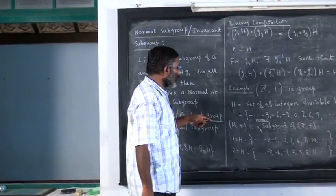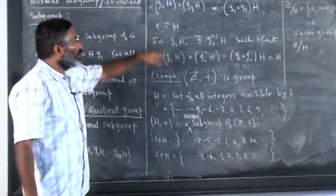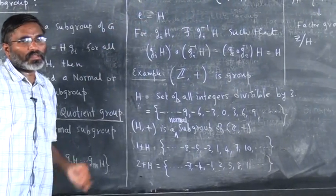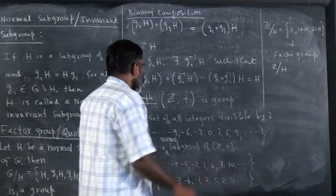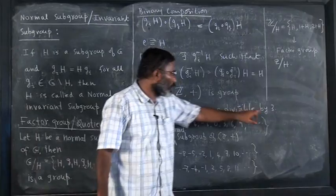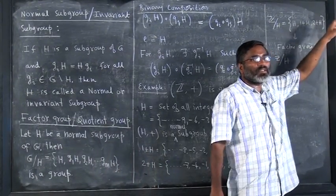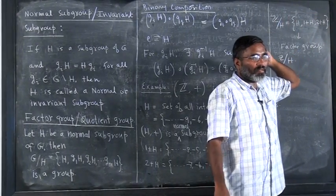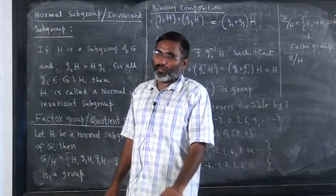Such factor groups are very useful when we apply in crystallography and in general in physics. As you can see, this is an infinite group, subgroup is also infinite, but the factor group is finite - its order is just 3. If I choose the set of all integers divisible by 5, then I will have h, 1+h, 2+h, 3+h, 4+h; 5+h will be the same as h itself, so you will have a group of order 5.